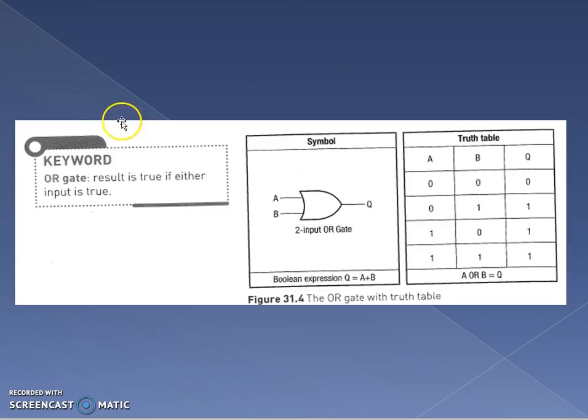The OR gate. So the OR gate result is true if either input is true. So here we've got the A or the B going in. And if we see a 1, then we've got a 1. There's our Boolean expression.